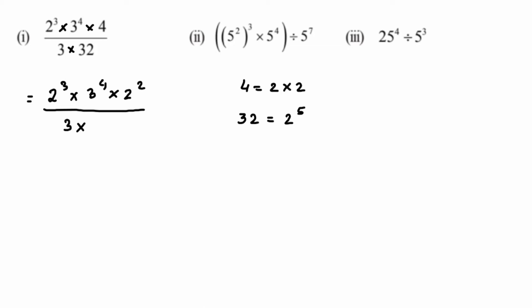How do I know 32 equals 2 to the power 5? When you do a prime factorization of 32 you will get 2 to the power 5. I'm not solving that here because we have many questions, but you can try it out. So in place of 32 I'm writing 2 to the power 5.